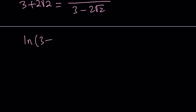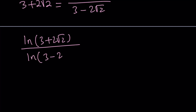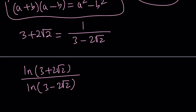Let's rewrite our expression: ln(3 plus 2 root 2) divided by ln(3 minus 2 root 2). Since 3 plus 2 root 2 can be written as 1 over something, that brings us to negative exponents. We can write 1 over 3 minus 2 root 2 as 3 minus 2 root 2 to the power negative 1.